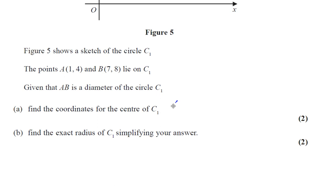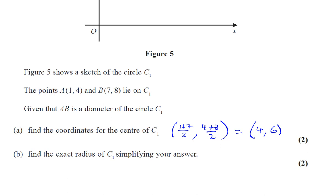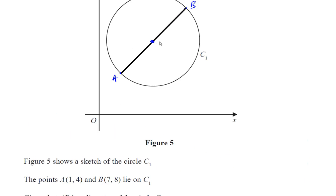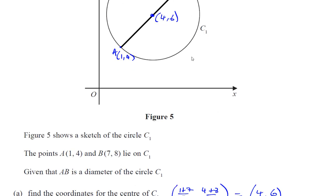The midpoint is the average of the x-coordinates of A and B, so it's going to be (1 + 7) divided by 2. And the average of the y-coordinates of A and B, which is (4 + 8) divided by 2. So that's going to give us 8 divided by 2, which is 4, and 12 divided by 2, which is 6. So the center of the circle is going to be (4, 6), exactly halfway between A and B.